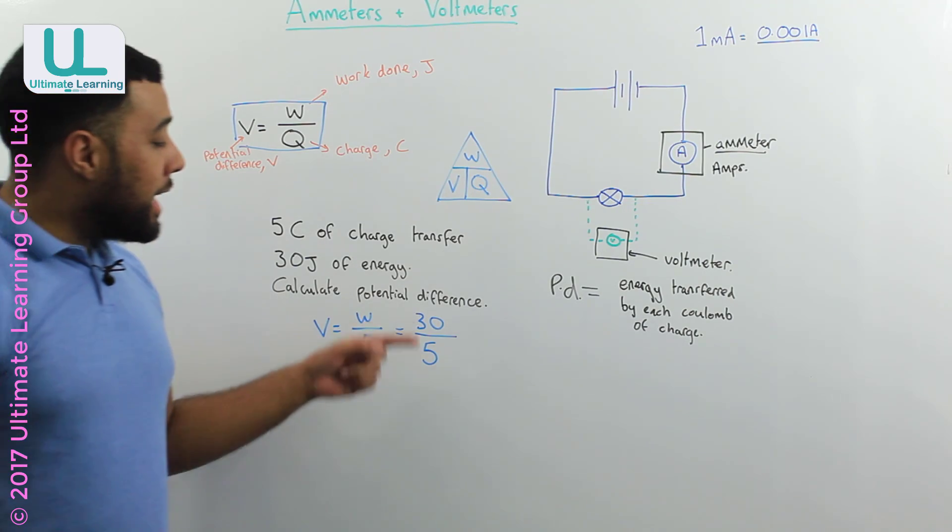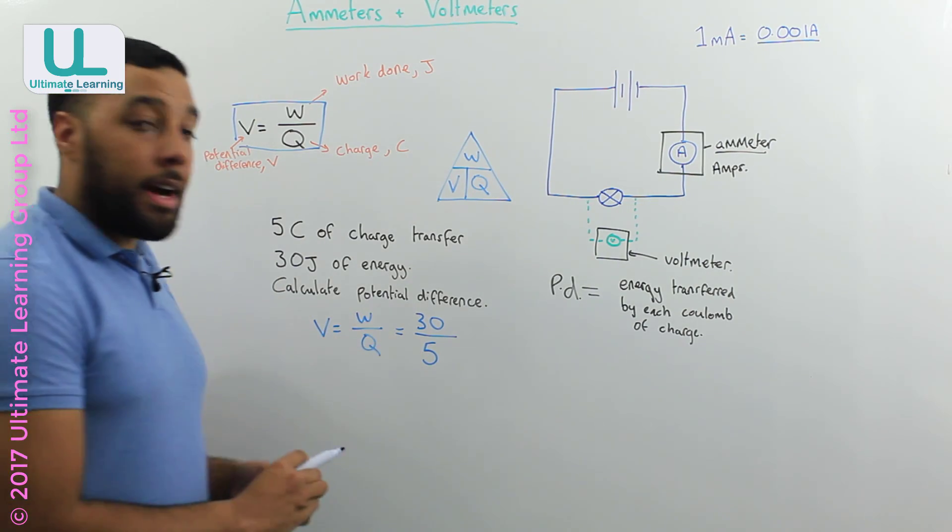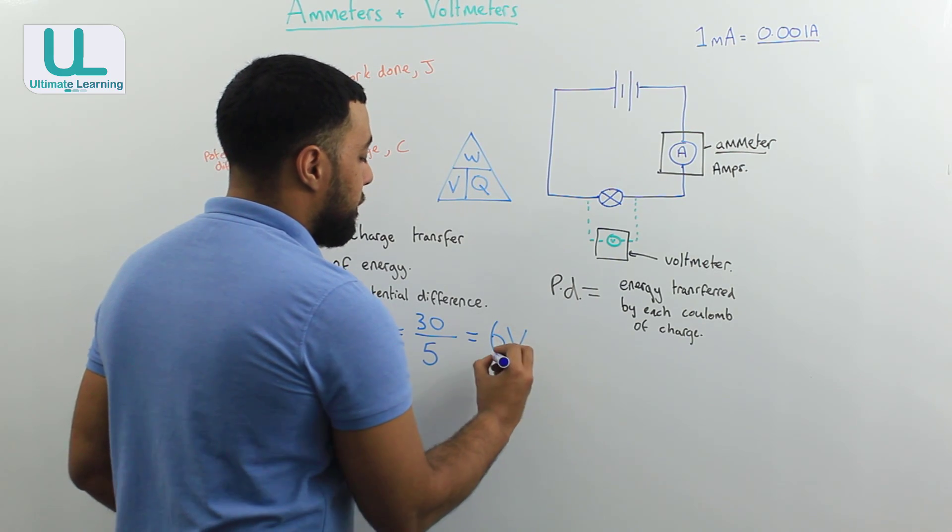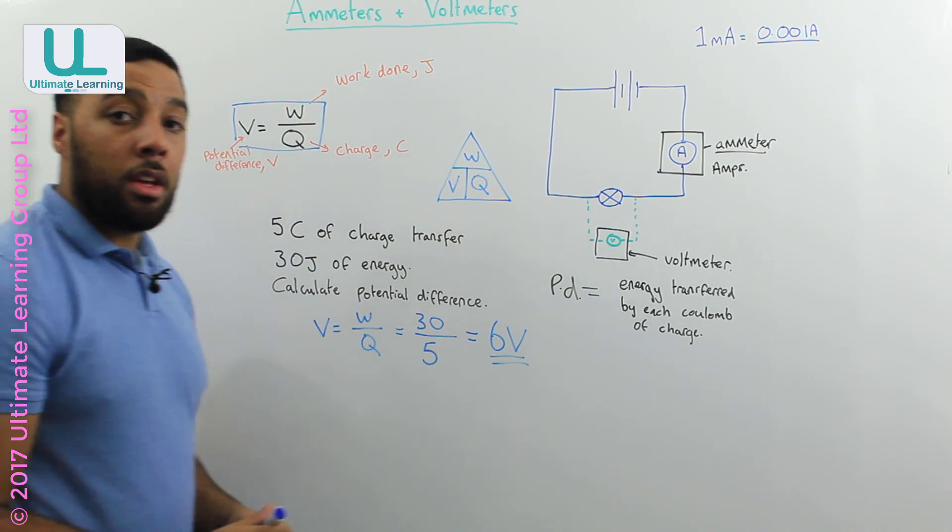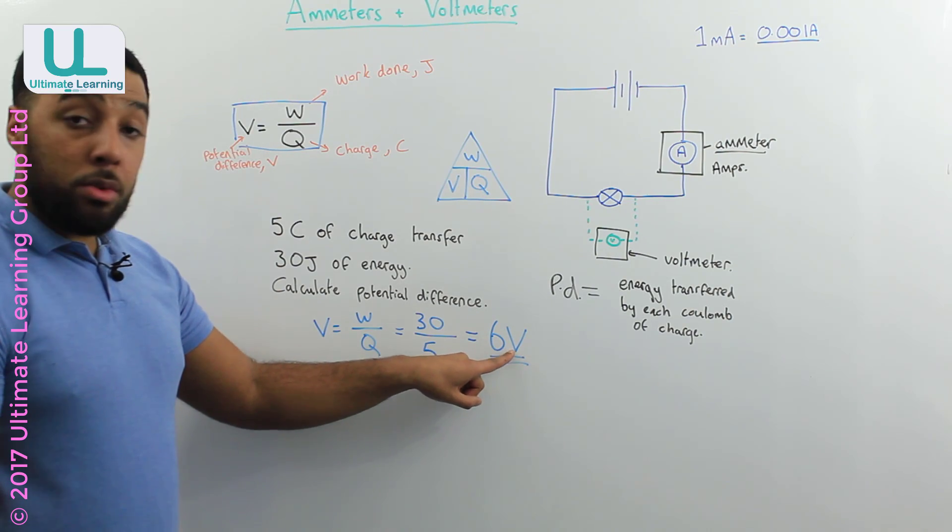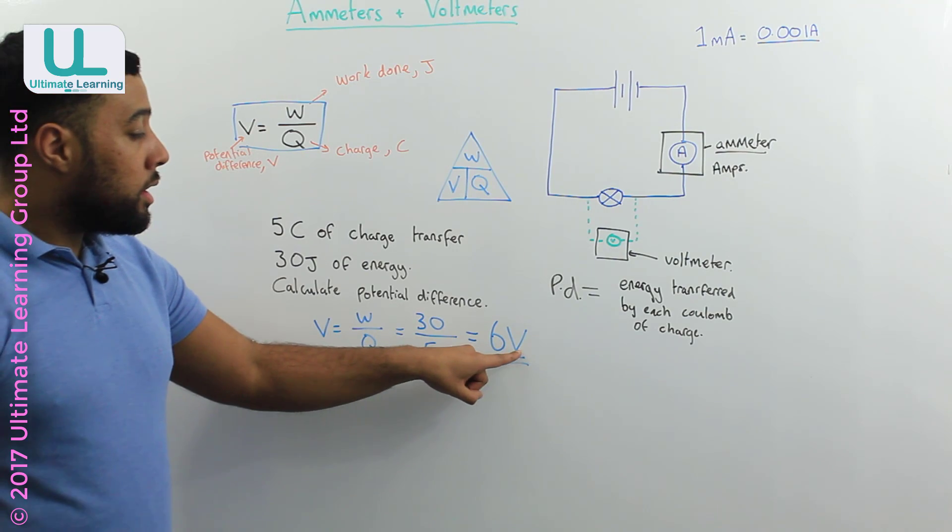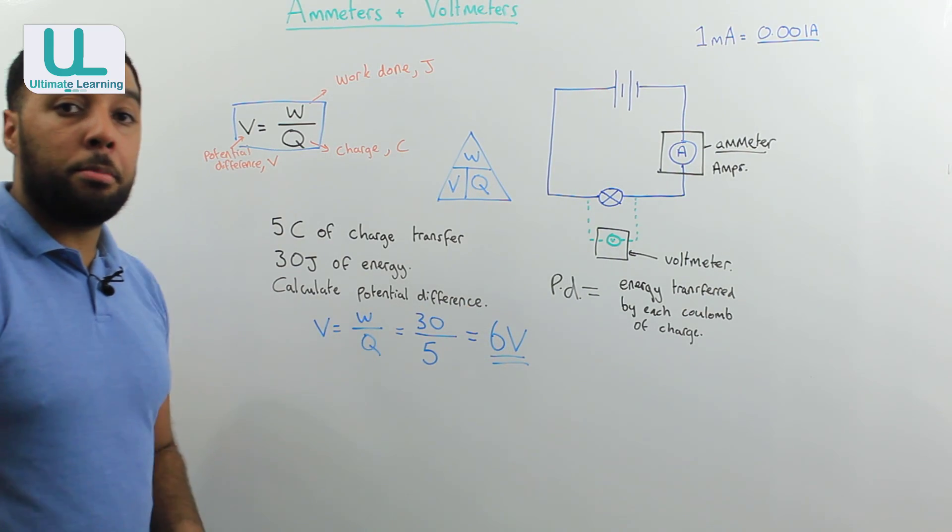If I get my calculator, 30 over 5 gives me 6 volts. It's 6 volts because it's asked us to calculate potential difference, and volts is the unit for potential difference.